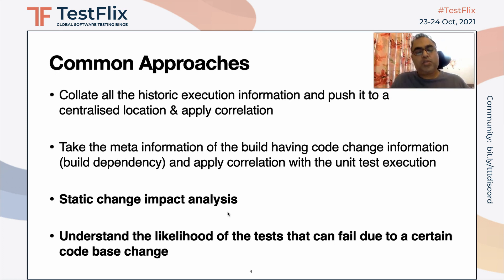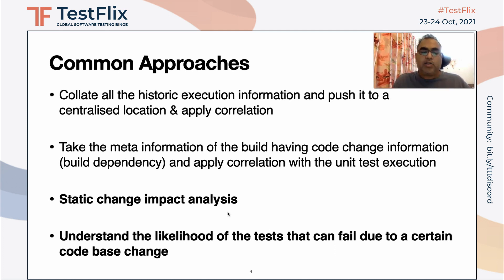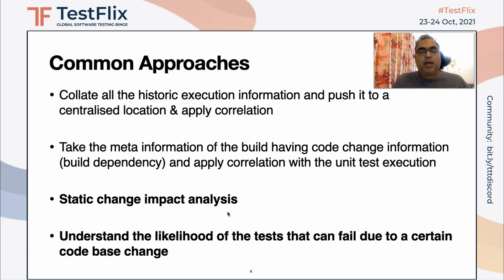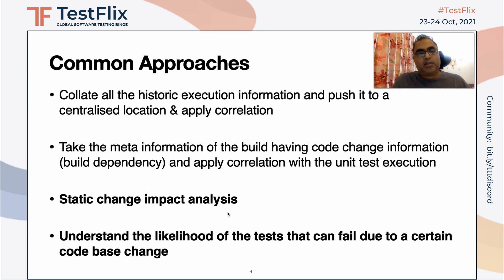You can use tools like OpenClover or do JVM instrumentation to get that instrumentation data. Then you correlate it with the execution data and can identify, if there is a code change of four lines, what tests get executed.